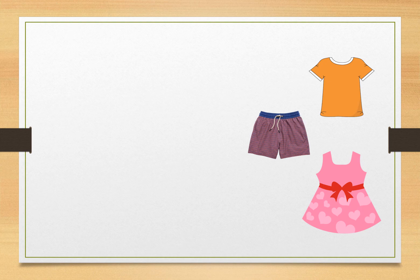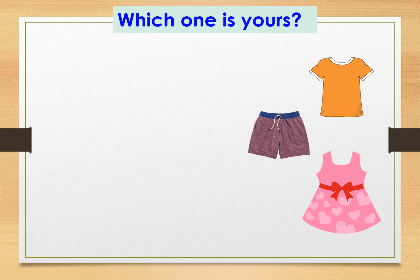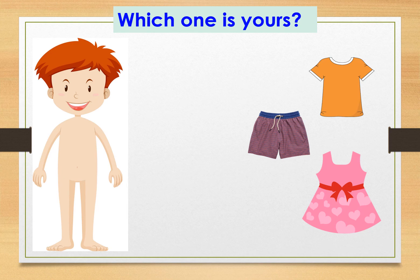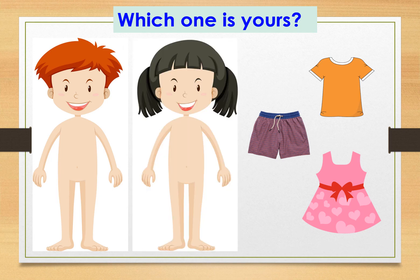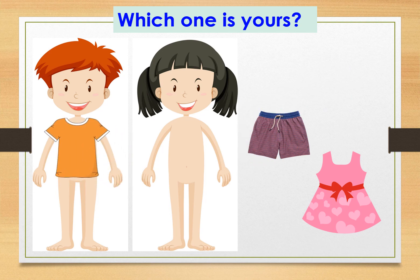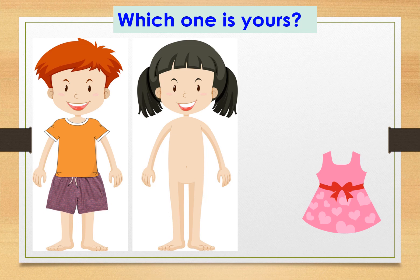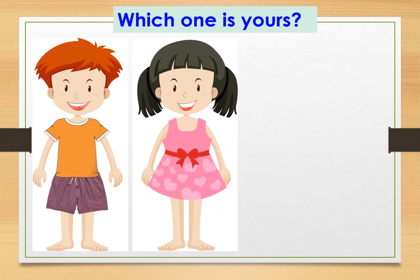Now, let's prepare your activity — which one is yours? First, the boy: where are the clothes for a boy? Can you point to them and match them to the boy? And for the girl, can you paste the girl's clothes? Let's start! Boy uses a t-shirt and short pants. And the girl uses a dress. Ta-da! Can you do it by yourself? Let's start! Thank you.